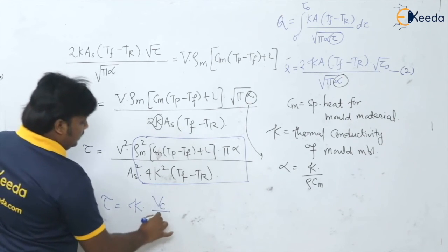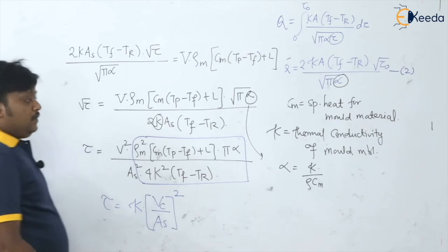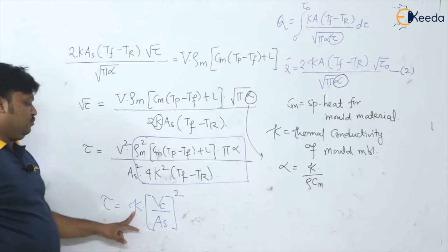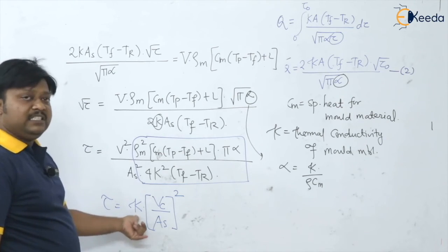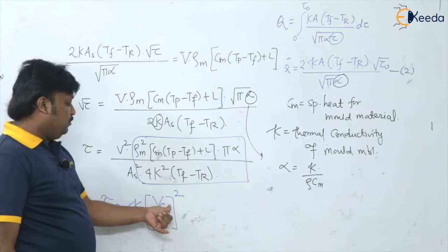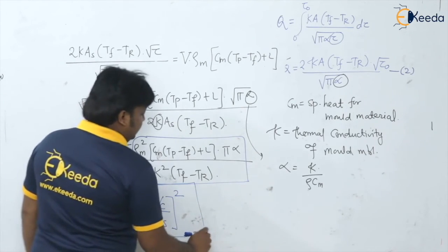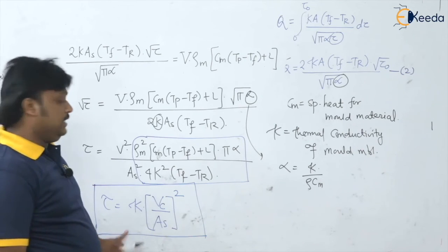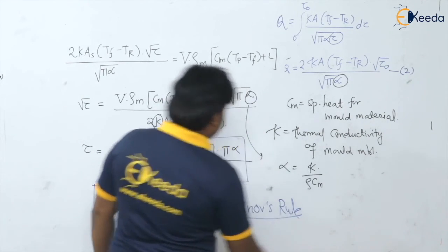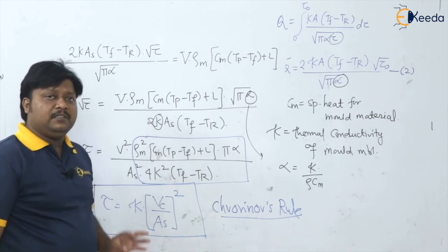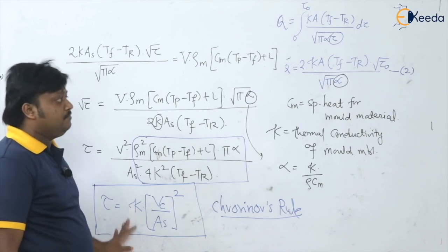We write τ = K · (V / As)², where K is a constant — also known as the solidification factor or mold constant — and V/As is the volume of casting divided by the surface area of casting. This is the formula for the solidification time τ. This rule is also known as Chvorinov's rule. This is a very important formula; many numericals in the GATE examination are based upon this formula.